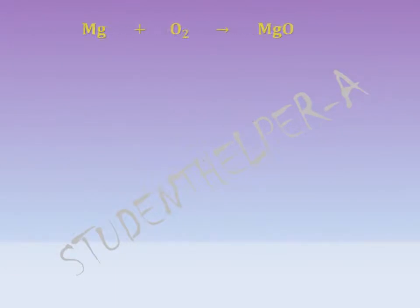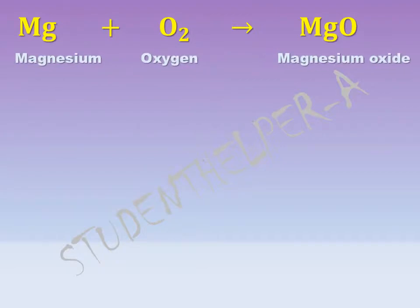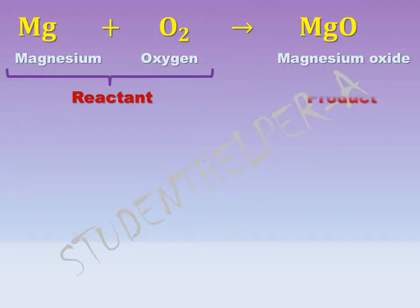Second example: Mg plus O2 gives MgO — that is, magnesium reacts with oxygen to give magnesium oxide. Magnesium and oxygen are the reactants, while magnesium oxide is the product.